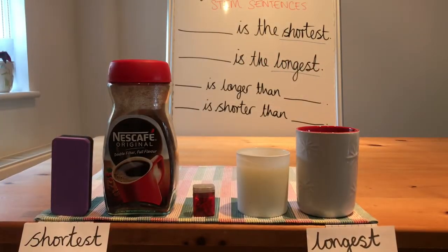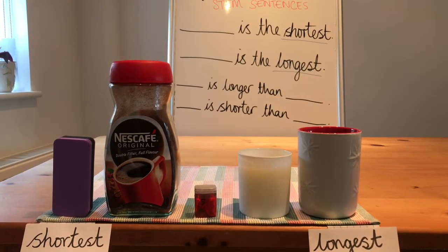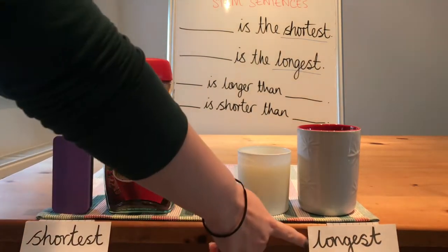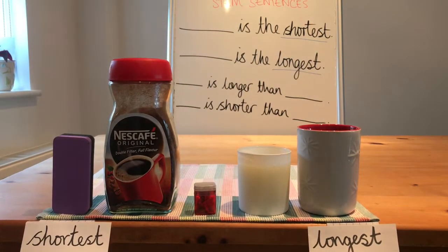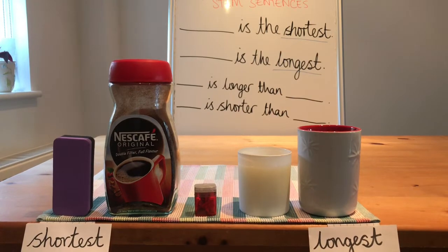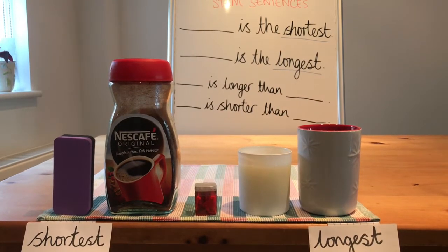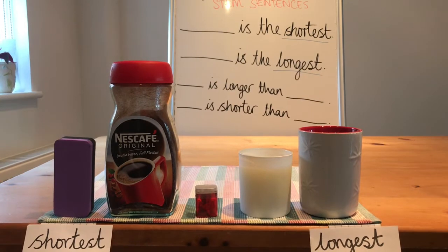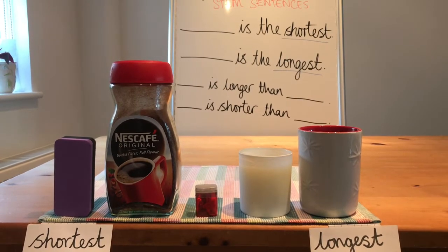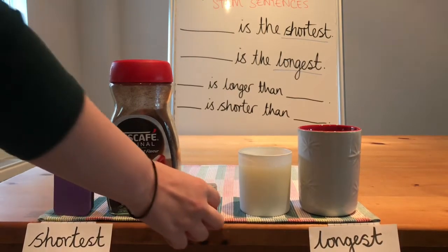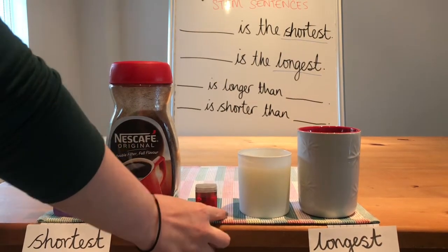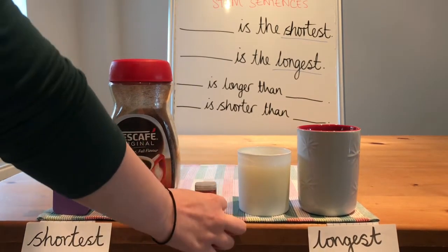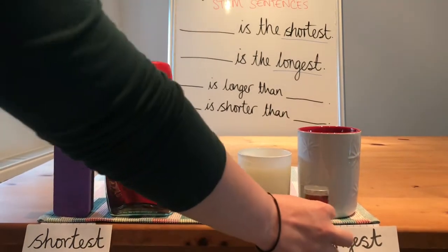Here are five objects of different lengths. We are going to order them from shortest to longest. To make it easier to compare the objects I've stood them up to clearly see their lengths as they have the same starting point. Let's begin by finding the object with the shortest length. We can see that this is the sharpener because the measurement from one end to the other is smaller than the others.